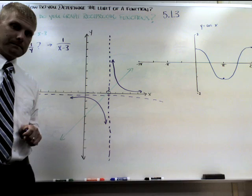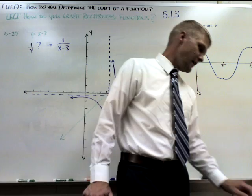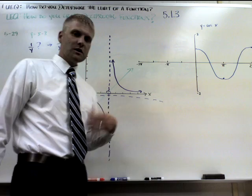Number 5-30, sketch the graph of the function f of x equals x squared minus 4. Now consider the graph of 1 over x squared minus 4. So we're going to repeat this process.